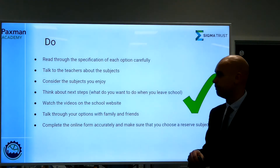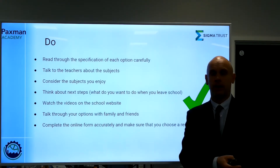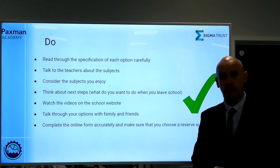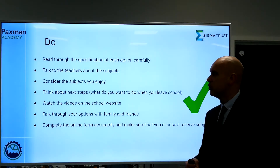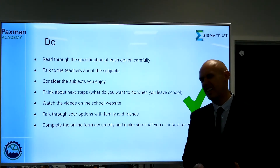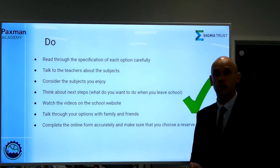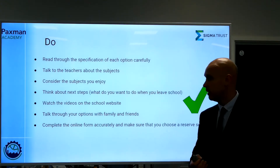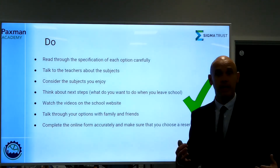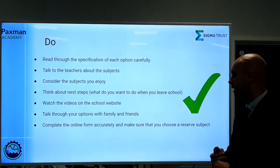Some really important do's. Do read through the specification carefully for each course and make sure it is appropriate for you — some courses are more practically based than others. Do talk to teachers about the subject; there is plenty of time to do that. Do consider the subjects which you enjoy, as you'll be studying these for another two years — each additional subject means approximately five hours per fortnight of study. Do think about your next steps and how courses can complement what you want to do when you leave school. Watch the videos carefully on the school website. Do talk through your options as a family, think about good combinations and a broad and balanced offer, and do complete the form accurately and on time. When completing the form, you're asked to rank your choices — first choice, second choice — and there is also a reserve choice, so think that through carefully as well.